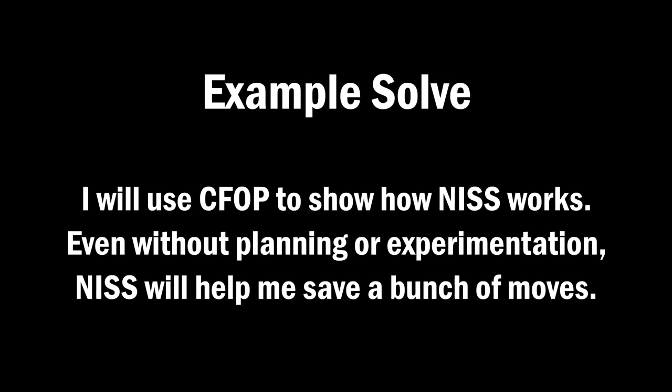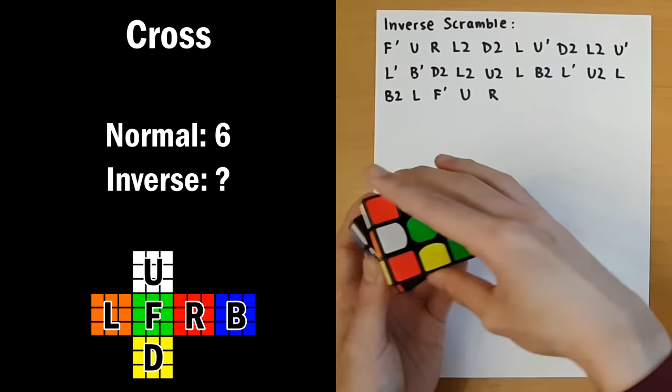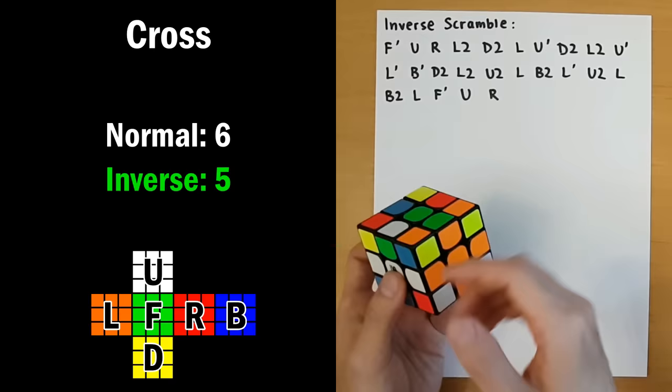Alright, so this orange cross, the best way I can see how to solve it is 1, 2, 3, 4, 5, 6. So now let's try the inverse scramble and look at orange again. Alright, this time orange is actually better. We can insert yellow next to blue, 1, and then insert white, 2, 3, and then insert green, 4, 5. So that is a better cross solution, and I will pick that and write it here.